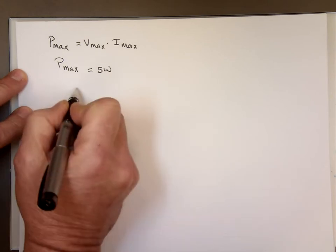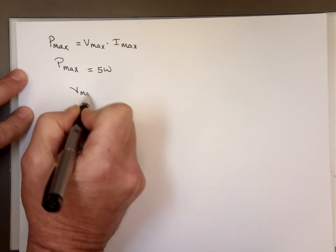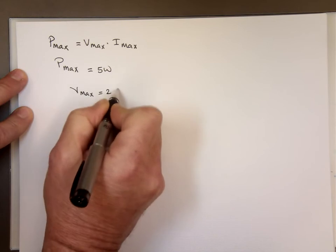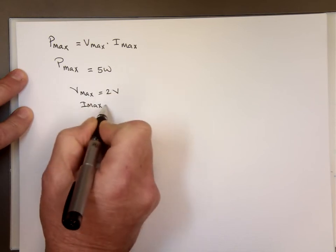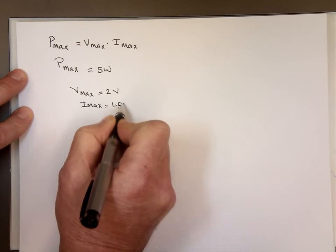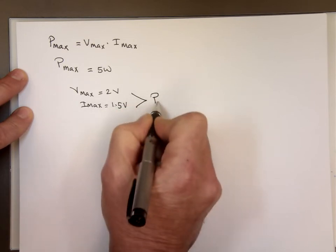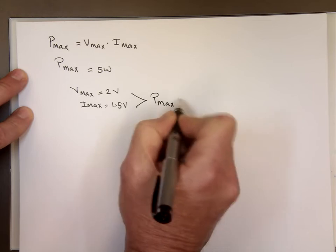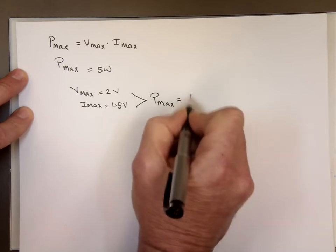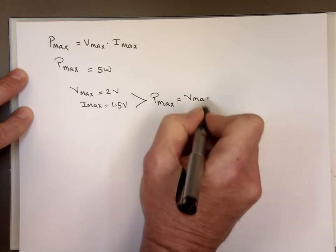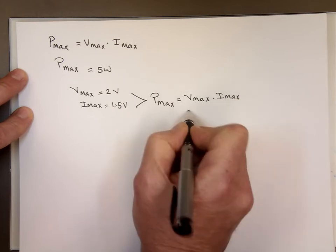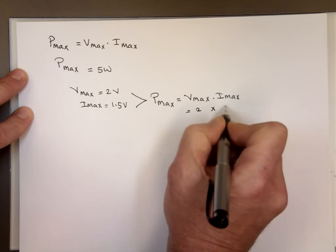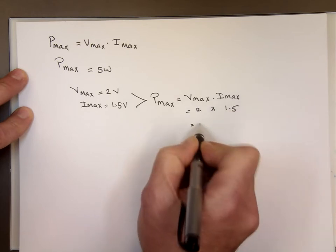And your Vmax, let's say the maximum is 2 volts, and the maximum current going through that diode happens to be 1.5 volts, then from these two you can calculate the power, which is Vmax times Imax. That's 2 times 1.5, and that will give me 3 watts.